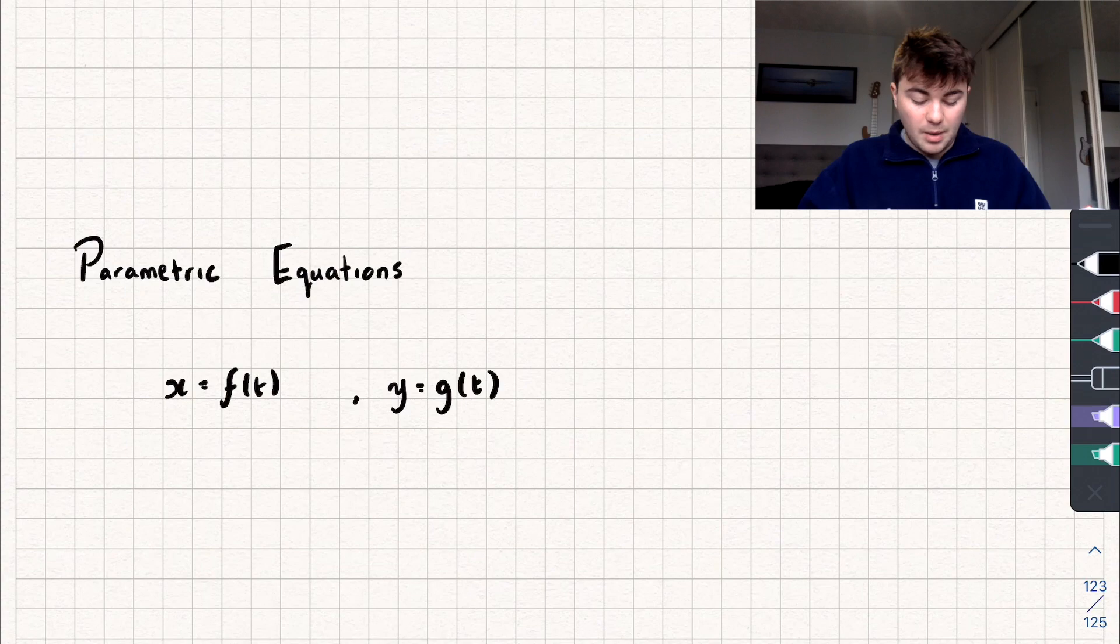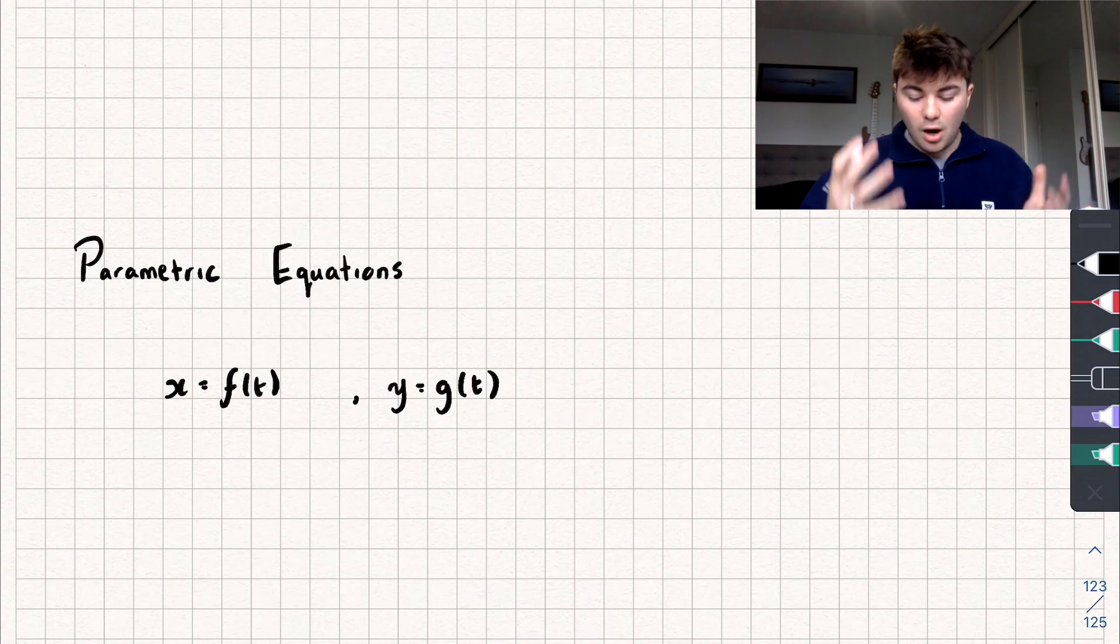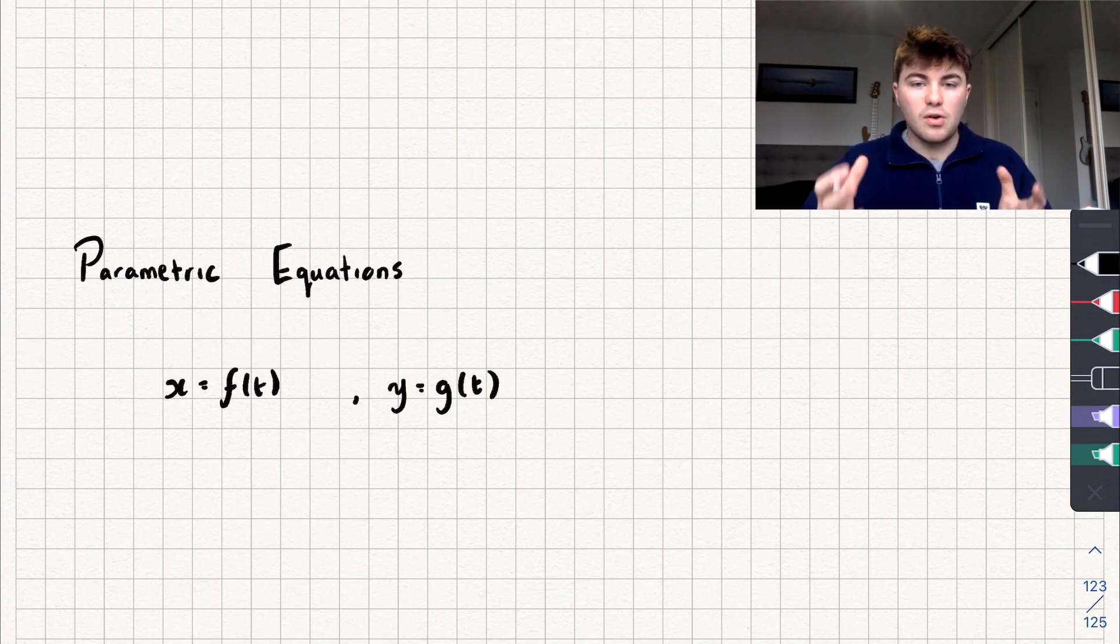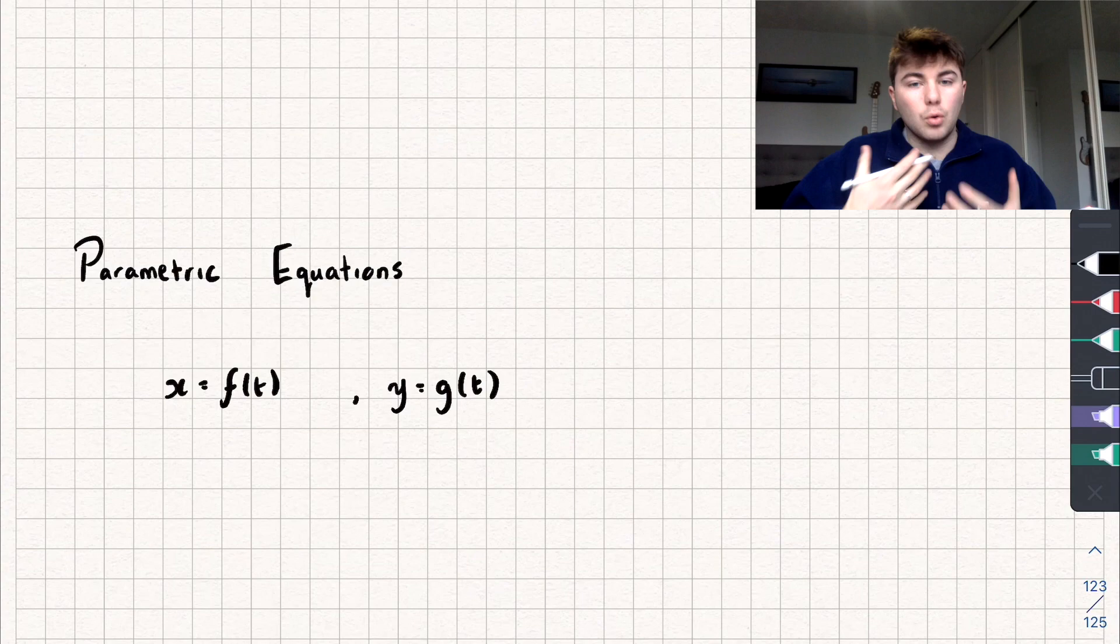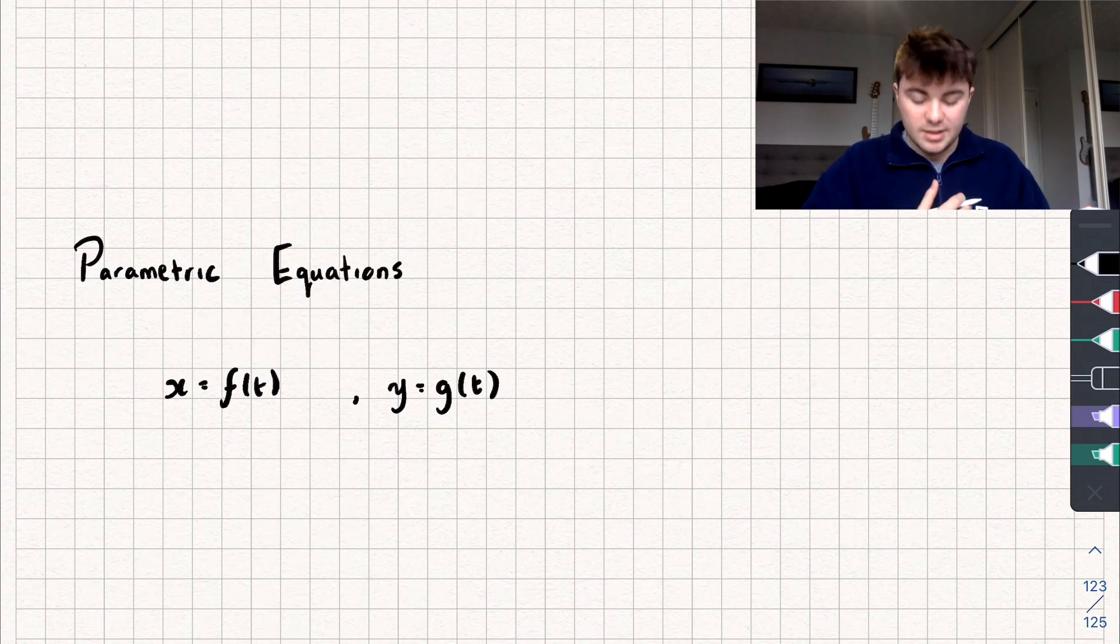Now the benefit of using these parametric equations is that we can describe a lot more complex curves that we can't actually describe using Cartesian equations. And the other benefit is if we have some really horrible Cartesian equation that's difficult to differentiate, we could represent that as two simpler parametric equations that we could then differentiate or just work on, and it makes the maths a lot easier.